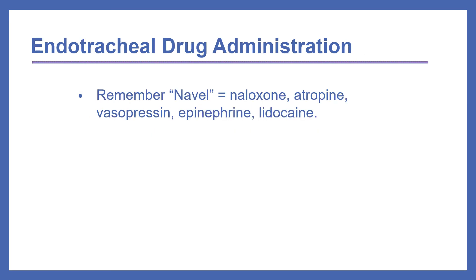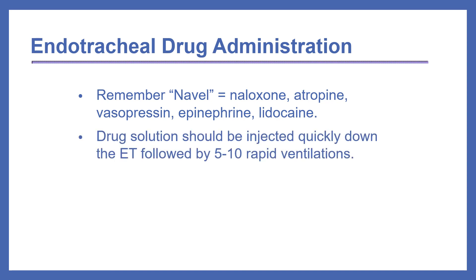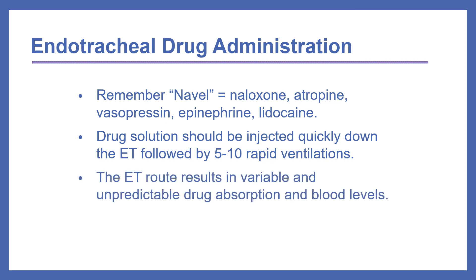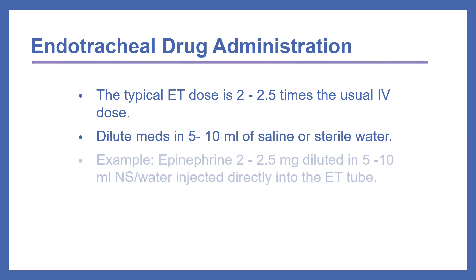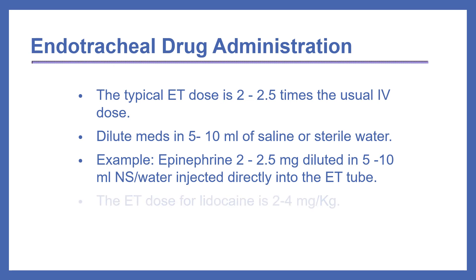For endotracheal drug administration, remember the mnemonic NAVEL: naloxone, atropine, vasopressin, epinephrine, and lidocaine. The drug solution should be injected quickly down the endotracheal tube followed by 5 to 10 rapid ventilations. The ET route results in variable and unpredictable drug absorption and blood levels. The typical endotracheal dose is 2 to 2.5 times the usual IV dose, diluted in 5 to 10 mLs of saline or sterile water. For example, epinephrine 2 to 2.5 mg is diluted in 5 to 10 mLs and injected directly into the ET tube. The ET dose for lidocaine is 2 to 4 mg per kg.